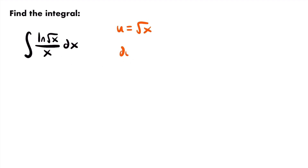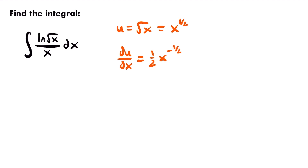We'll take the derivative of u with respect to x. To differentiate the square root of x, we rewrite it as x to the one-half power — taking the square root is the same as raising to the one-half power. That makes it clear how to apply the power rule: multiply the power down and subtract one from the exponent. So du/dx equals one-half times x to the negative one-half power.